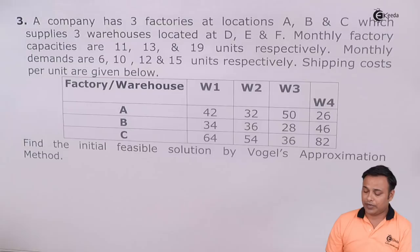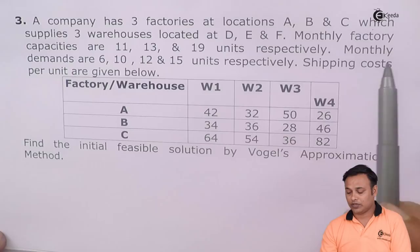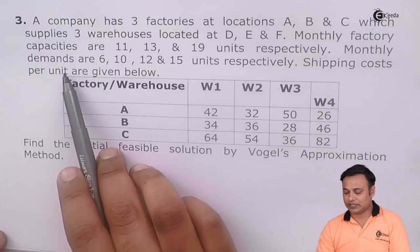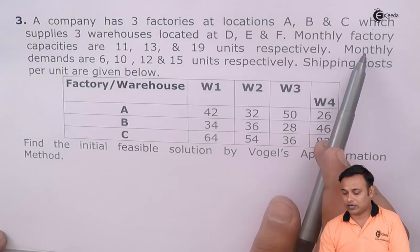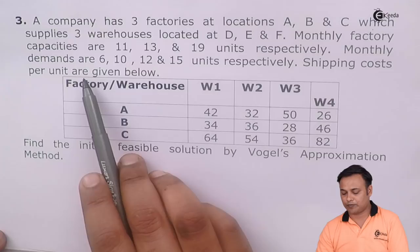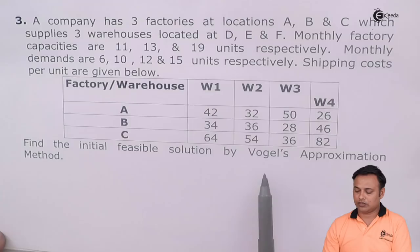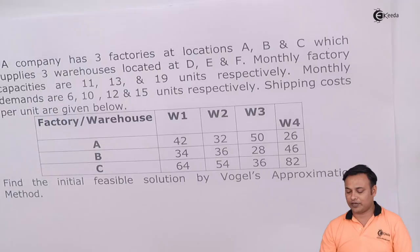Let's read the problem first. In the problem, a company has three factories at locations A, B, and C, and they have three warehouses D, E, and F. Monthly capacities are 11, 13, and 19, whereas the demands are 6, 10, 12, and 15. We are also given the shipping cost per unit and we are supposed to find out the initial feasible solution by Vogel's Approximation Method.